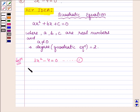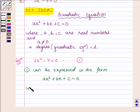Now, equation 1 can be expressed in the form ax squared plus bx plus c equals 0, where a equals 3, the coefficient of x squared in equation number 1.